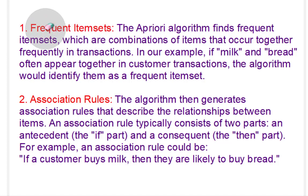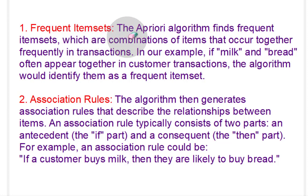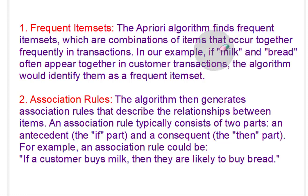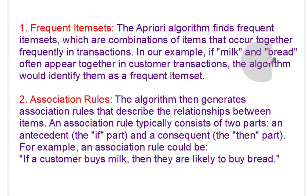The first thing we need is to find the frequent item sets. The Apriori algorithm finds the frequent item sets, which are combinations of items that occur together. For example, it is seen that in a particular market, a person is buying milk and bread. These two things generally come together — a person who is buying milk will most probably also buy bread. The algorithm classifies them together and would identify these two as a frequent item set.